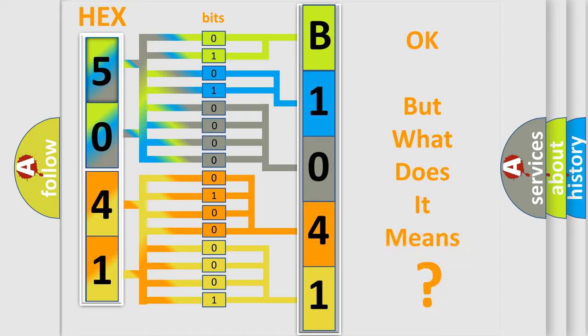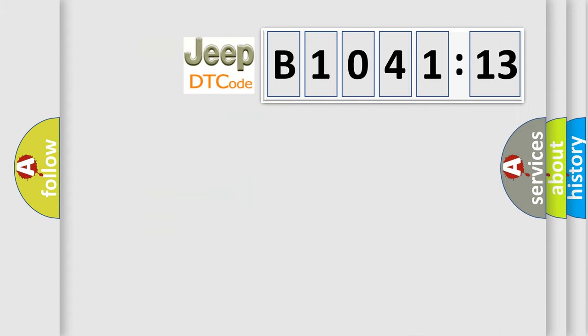The number itself does not make sense to us if we cannot assign information about what it actually expresses. So, what does the diagnostic trouble code B104113 interpret specifically?